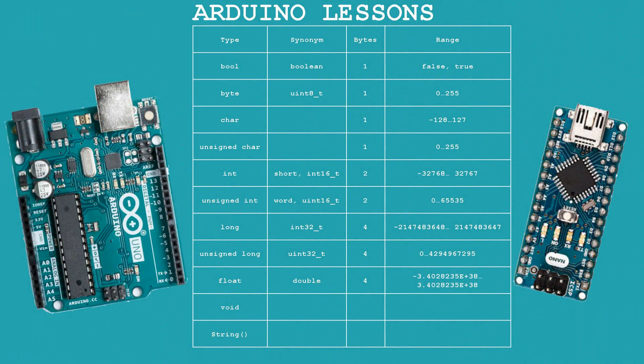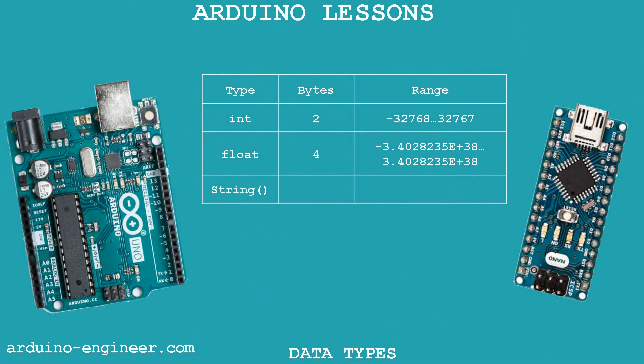We will talk more about string variables later. In the meantime, let's remind ourselves of the Arduino data type table – it's not necessary to memorize them all yet, but it will not hurt to familiarize yourself. Keeping the promise, I've reduced the most used types of variables to a simplified table. Basic small projects can be built on just three types of variables presented in this table.